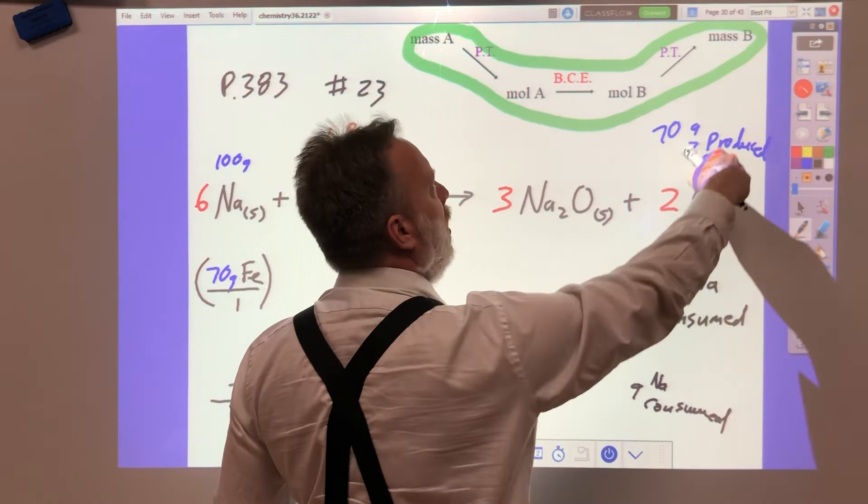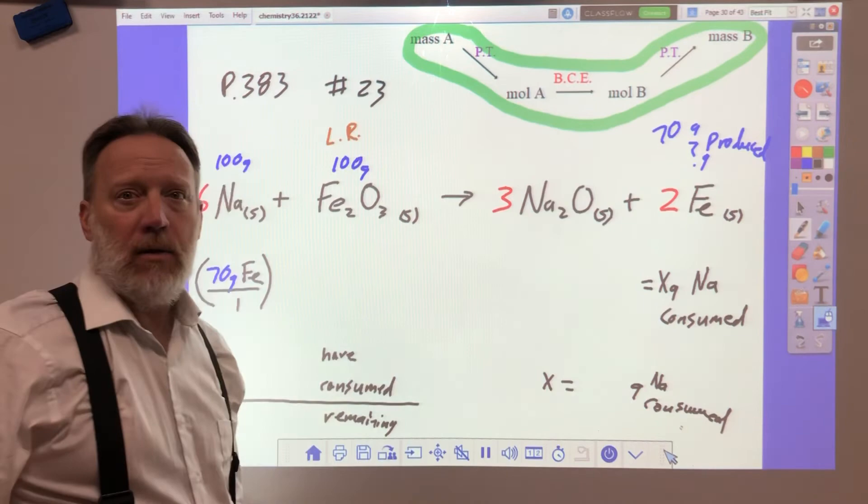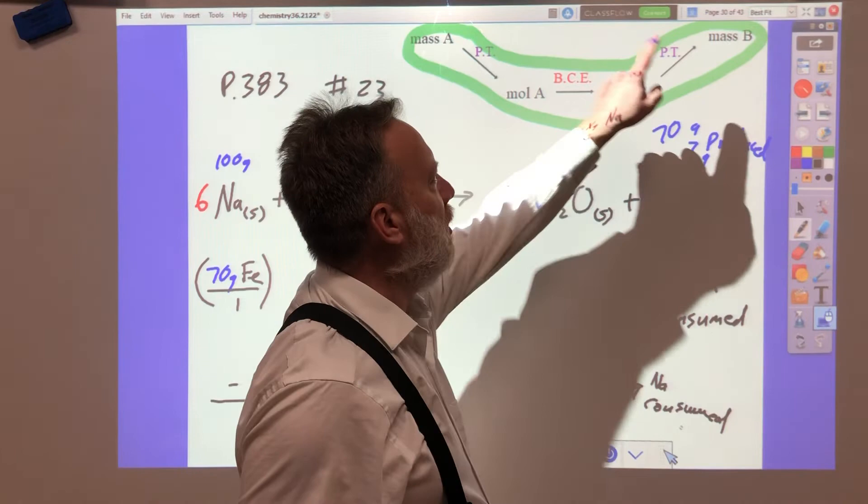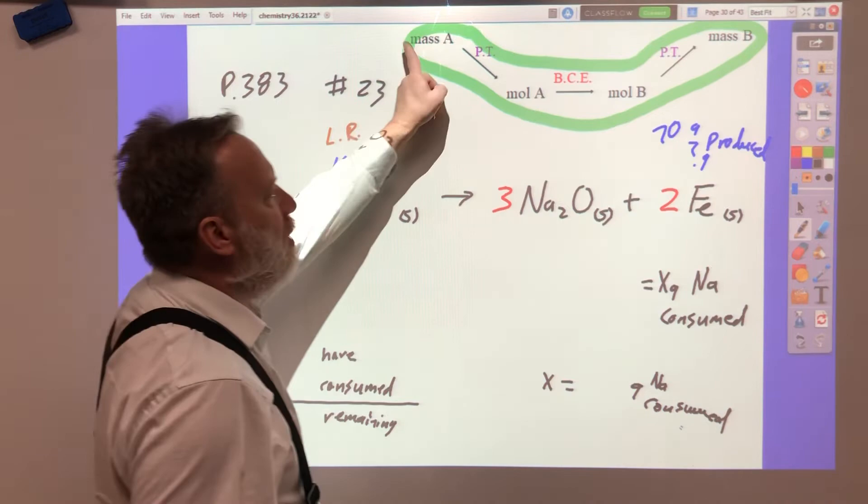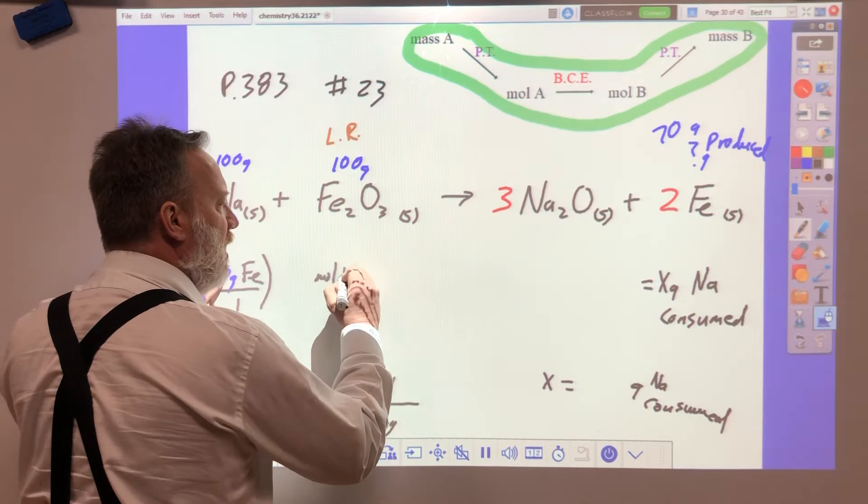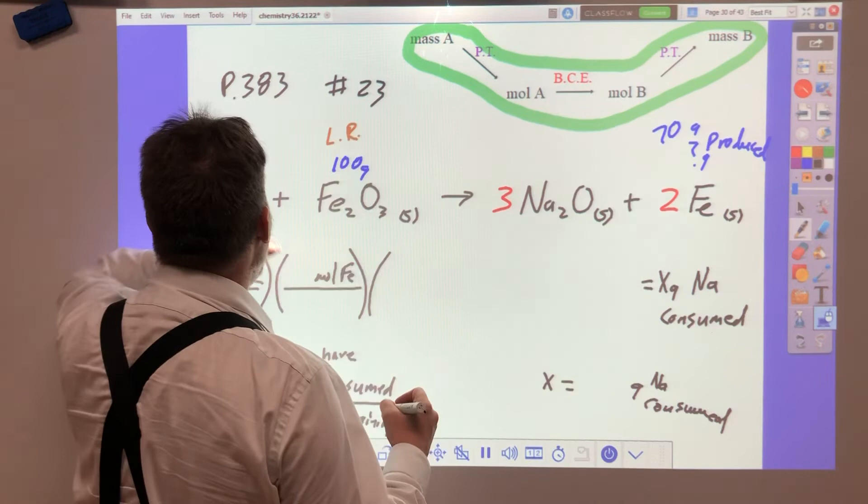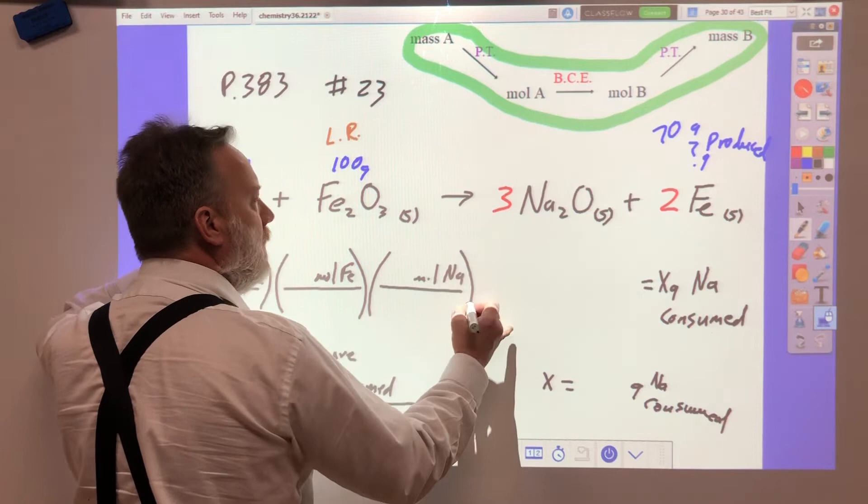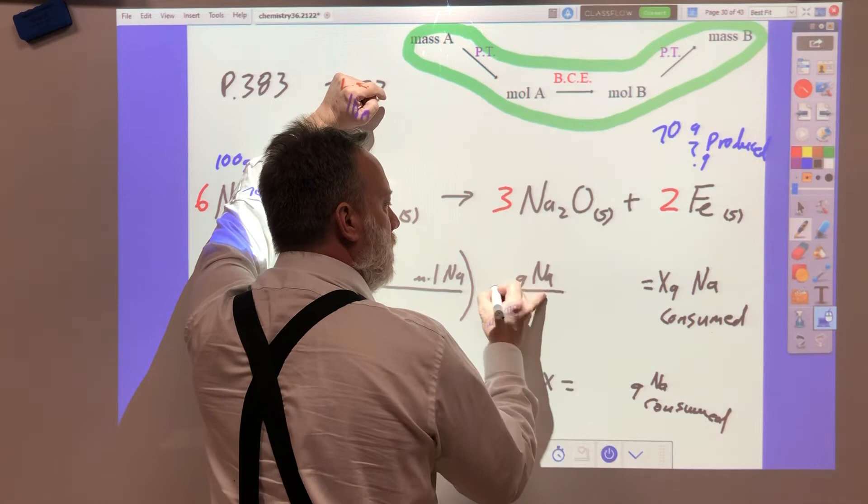And we're going to go mass to moles to moles to mass. This guy again. But this is playing the role of A, and this is playing the role of B. Let that sink in. Your product is playing the role of A this time. And what we're looking for to figure out how much of this we used up, that's playing the role of B. So we go grams of A to moles of A. So it should be moles Fe over grams of A. Then moles of A over moles of Na, and then grams of Na.